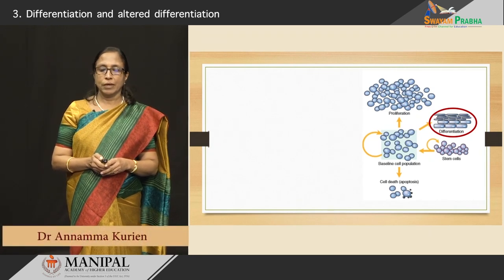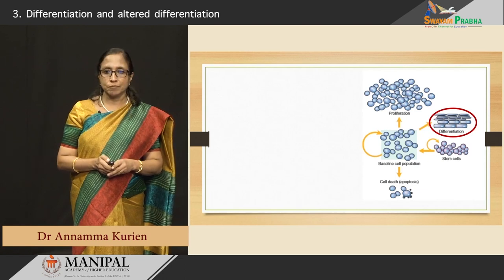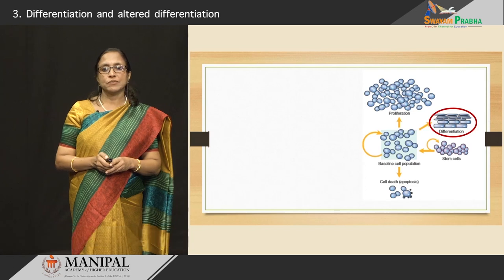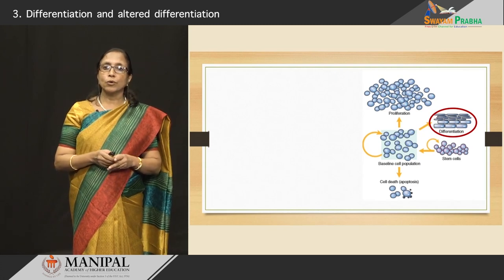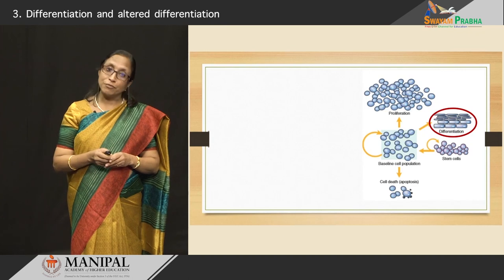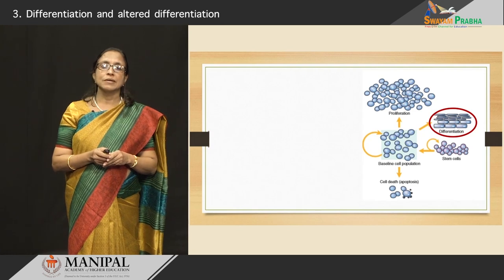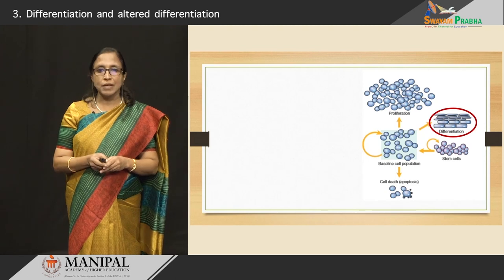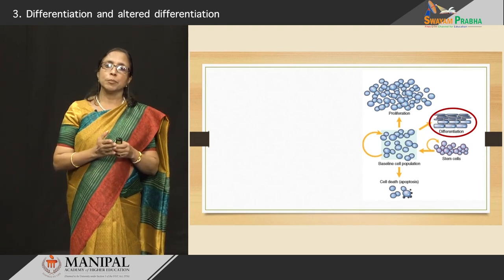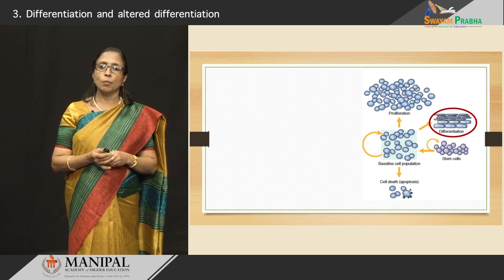When we look at the body and various tissues, tissues have a lot of cell populations. The cells all come from stem cells and these cells go on proliferating and increasing in number. Some of these cells undergo differentiation to perform specialized functions, but along with proliferation, there is always cell death by apoptosis. In the body, there is a homeostasis between the cells which are proliferating and the cells which are dying. That is the normal process.